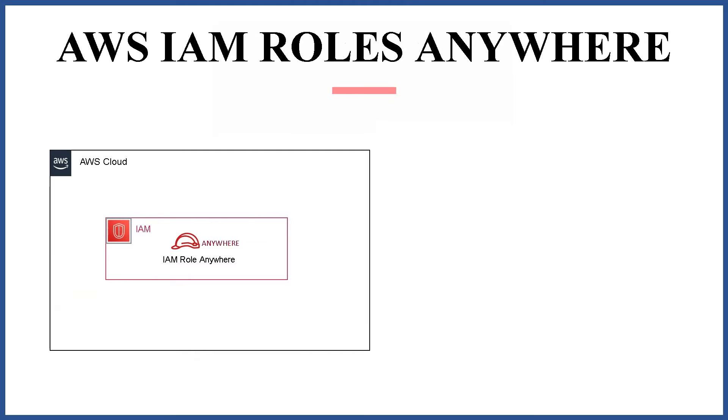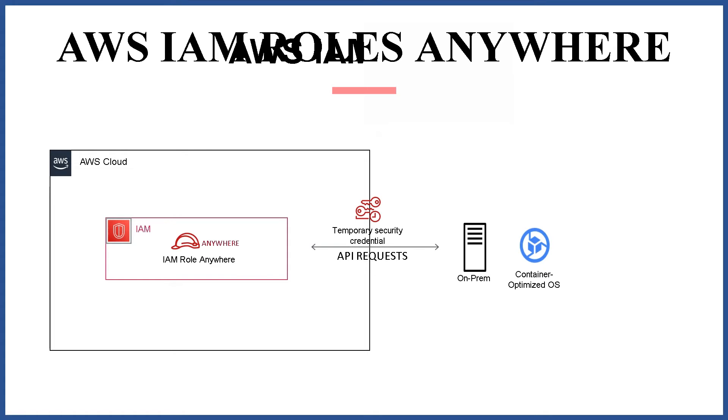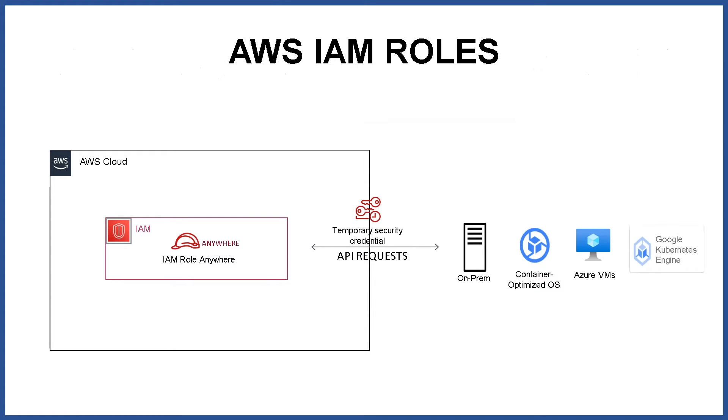Similarly, IAM Roles Anywhere works. It extends the capability of IAM Roles to access AWS APIs securely, even from workloads outside of AWS, in the same manner in which we use IAM Roles for workloads on AWS. With IAM Roles Anywhere, we can deliver short-term credentials to our on-premises servers, containers, or any other compute platforms on Azure, GCP, or anywhere else. This removes the need for long-term AWS access keys and secrets, which improves security and removes the overall operational overhead of managing and rotating long-term credentials. This also helps provide a consistent experience for managing credentials across our multi-cloud workloads.